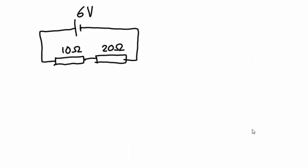Let's begin with the series arrangement. In a series circuit the current will be constant around the circuit. Therefore, if we want to work out the power dissipated by one of these resistors — let's begin with the 10 ohm resistor — we would have to use P equals I squared multiplied by R. The reason for this is that we know the resistance and we know the current is constant. If we tried to use an equation containing V we would be stuck, because we don't at this stage know the potential difference across this resistor alone. So that's why we must use P equals I squared R.